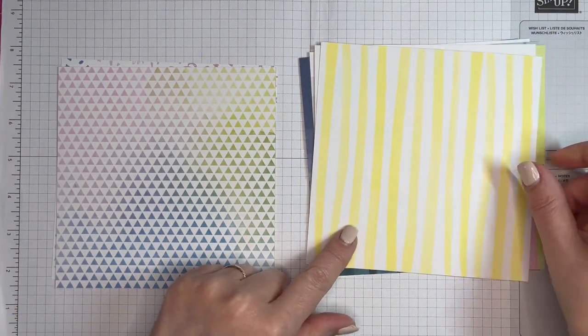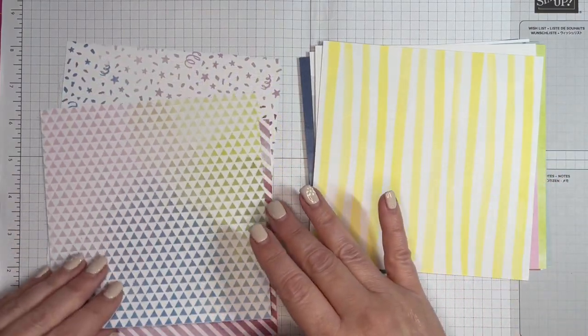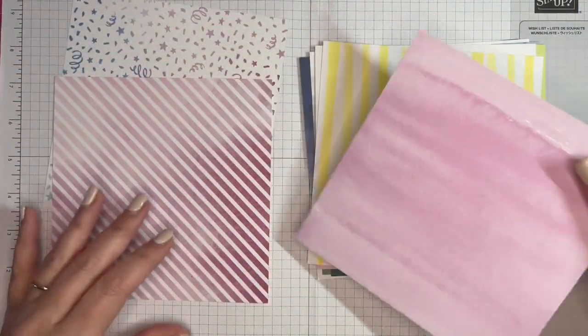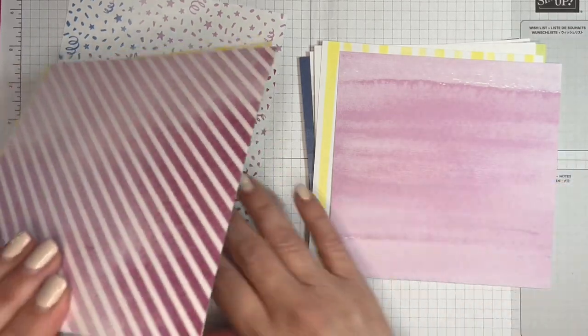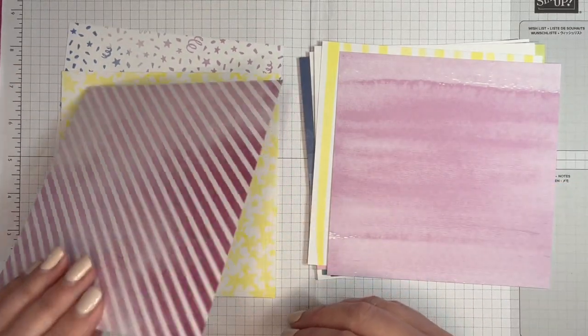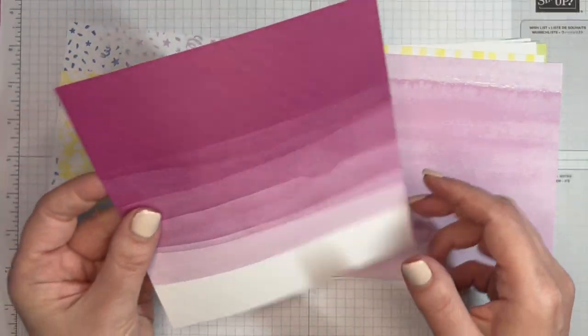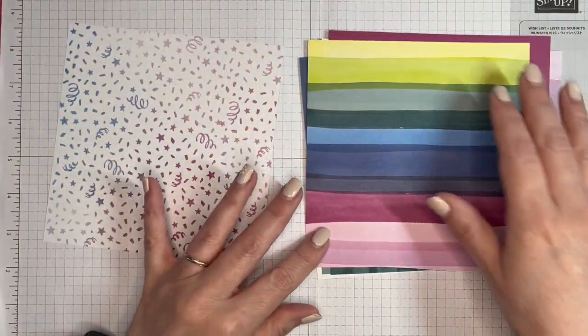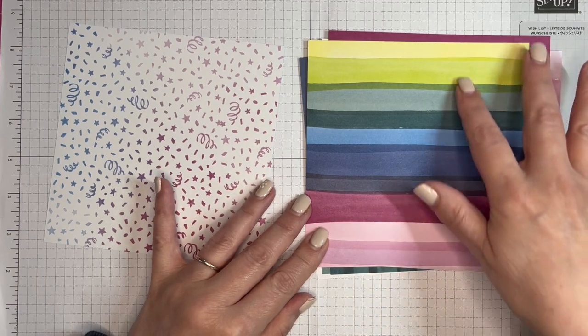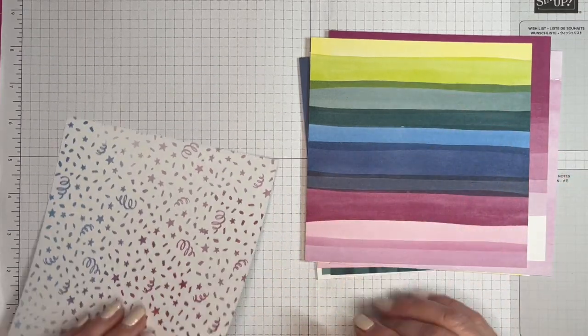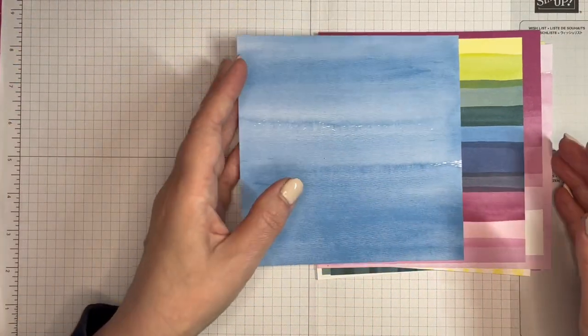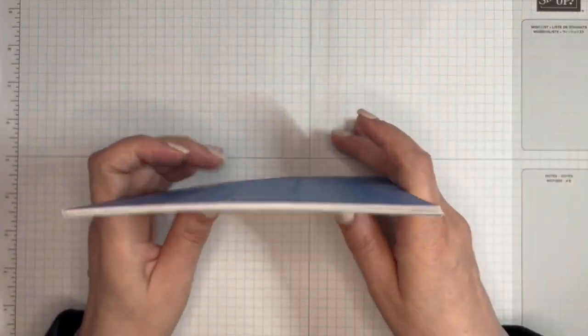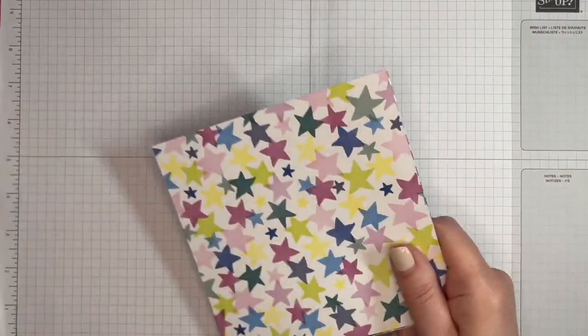Lemon Lolly, Lost Lagoon, Misty Moonlight and Pretty Peacock. So lots of gorgeous colors. I think we've got them all in that design there. So it really is bright and beautiful.